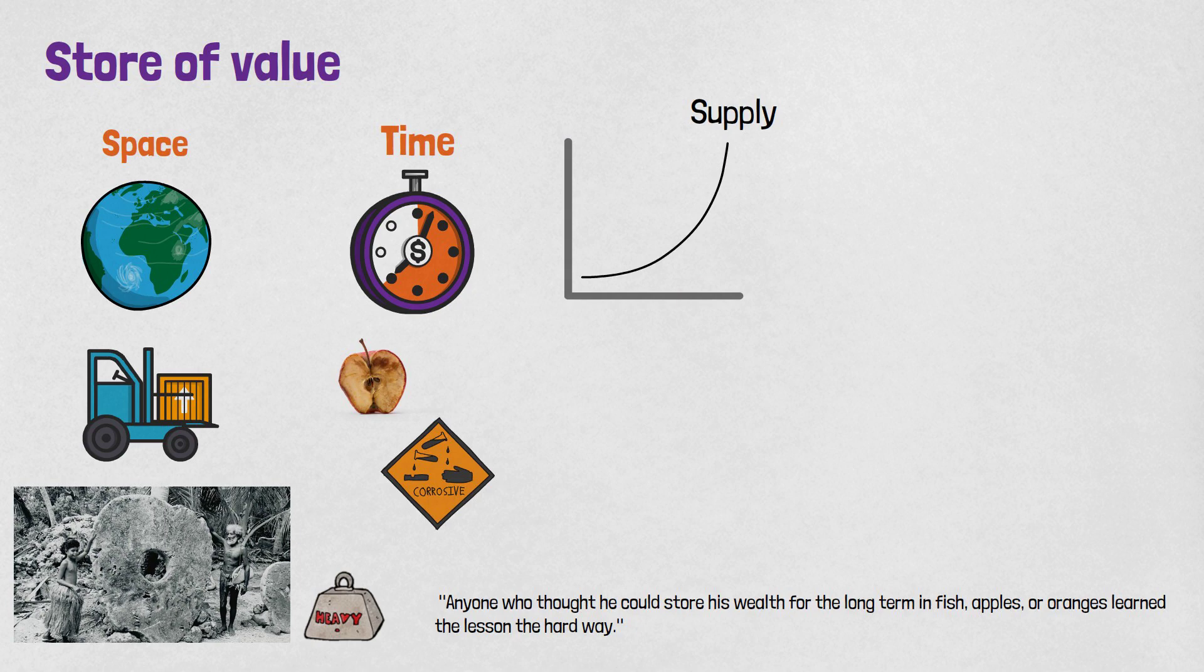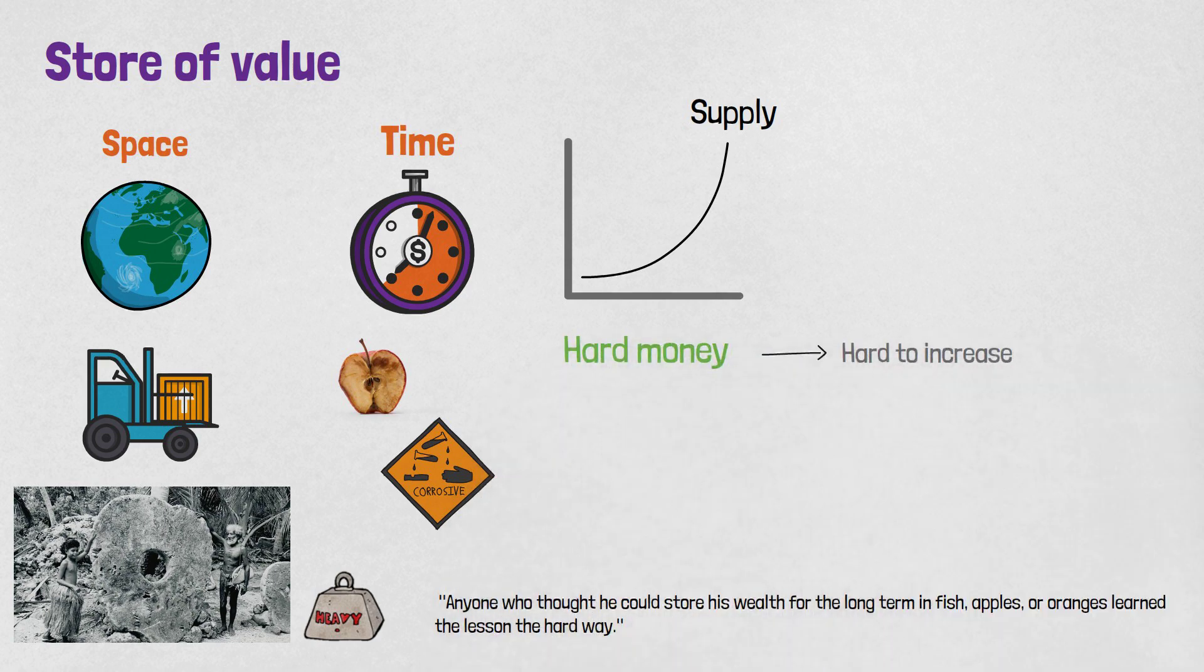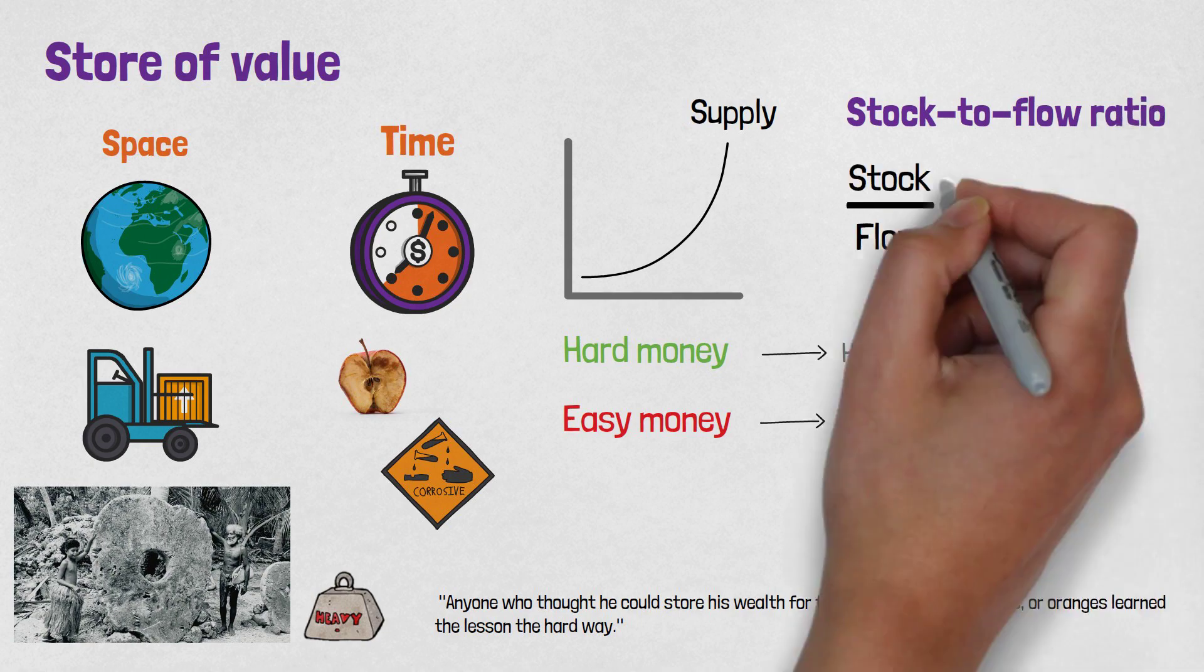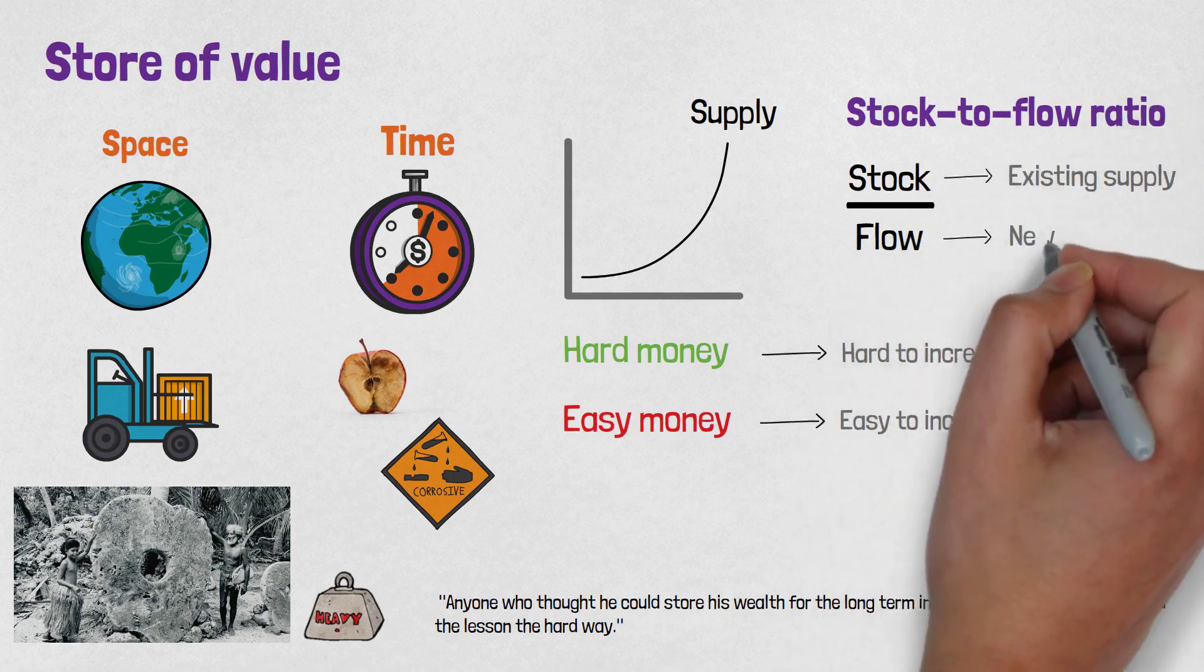That means that the money should not be created easily. Money with a supply hard to increase is called hard money, while easy money is money with a supply that can be easily increased. The hardness of money is demonstrated through the stock-to-flow ratio, where stock is all the existing supply in the circulation and flow is the rest of the supply that will be produced.